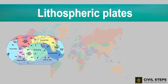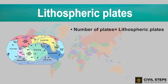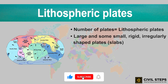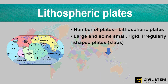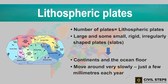First, we will be talking about the lithospheric plates. The lithosphere is broken into a number of plates which are known as the lithospheric plates. In other words, the earth's crust consists of several large and small rigid irregularly shaped plates which can carry continents and the ocean floor. These plates move around very slowly — just a few millimeters each year.